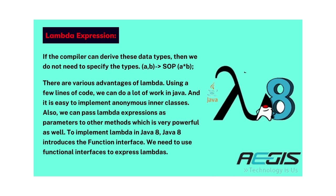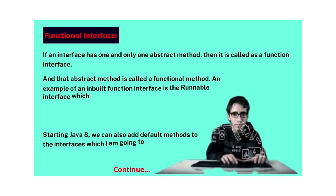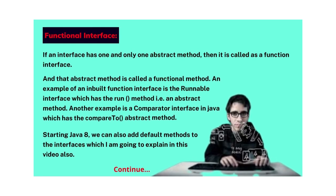There are various advantages of Lambda. Using a few lines of code, we can do a lot of work in Java, and it is easy to implement anonymous inner classes. Also, we can pass Lambda Expressions as parameters to other methods, which is very powerful. To implement Lambda in Java 8, Java 8 introduces the functional interface. We need to use functional interfaces to express Lambdas. The second feature is the Functional Interface.